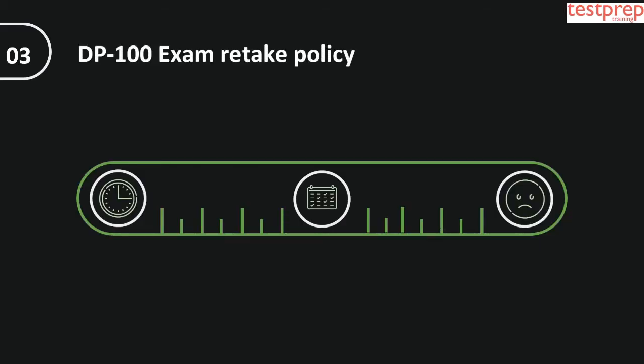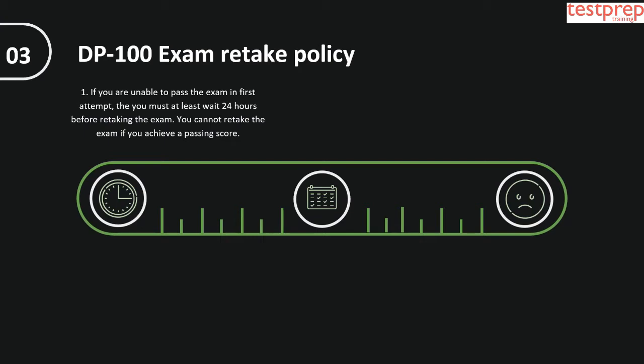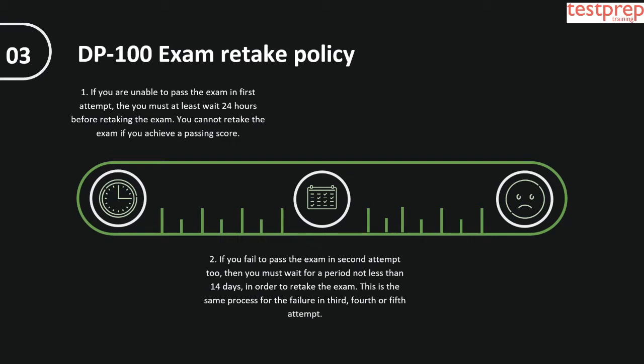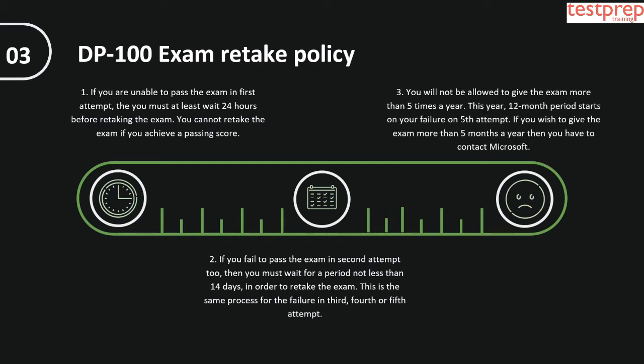DP100 exam retake policy. First, if you are unable to pass the exam on the first attempt, you must wait at least 24 hours before retaking the exam. You cannot retake the exam if you achieve a passing score. Second, if you fail the exam on the second attempt, you must wait a period of not less than 14 days to retake. This same process applies for failure on the third, fourth, or fifth attempt. Third, you will not be allowed to give the exam more than five times a year. This 12-month period starts on your failure on the fifth attempt. If you wish to give the exam more than five times a year, you have to contact Microsoft.